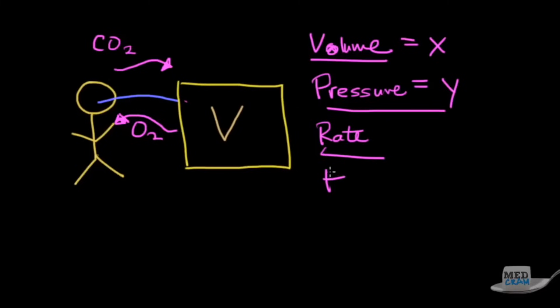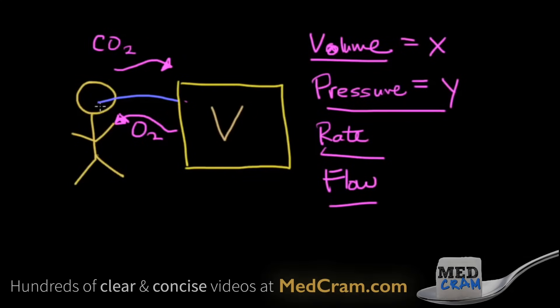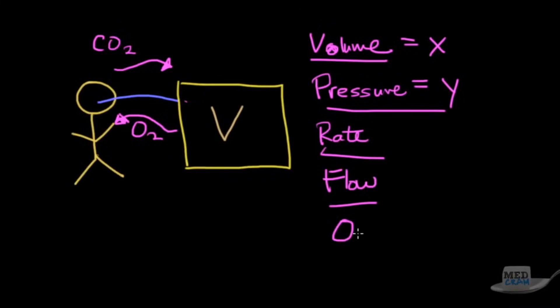We could also adjust the flow rate, so we can give that volume slowly or very quickly. The other thing that we can do is we can decide how much pressure to leave in there at the end of when we put the air in. Finally we can decide how much oxygen we want to put in there, a lot or a little.